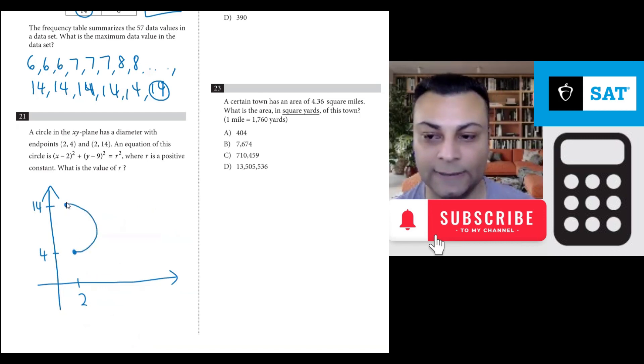So the circle will look like this. This part here is the diameter. And from y=14 to y=4, you get a distance of 10.